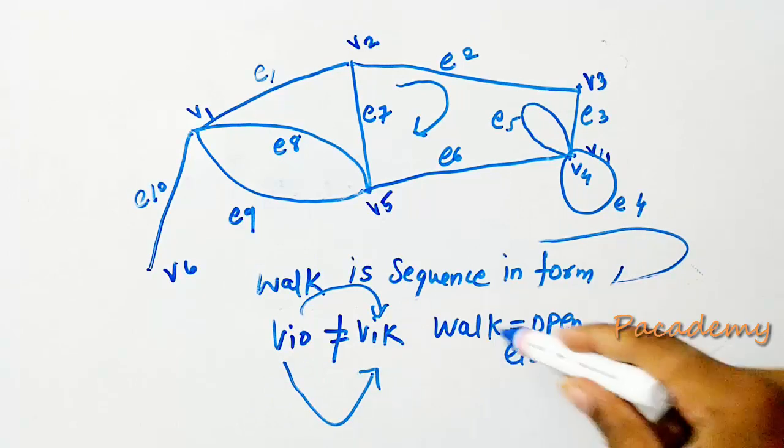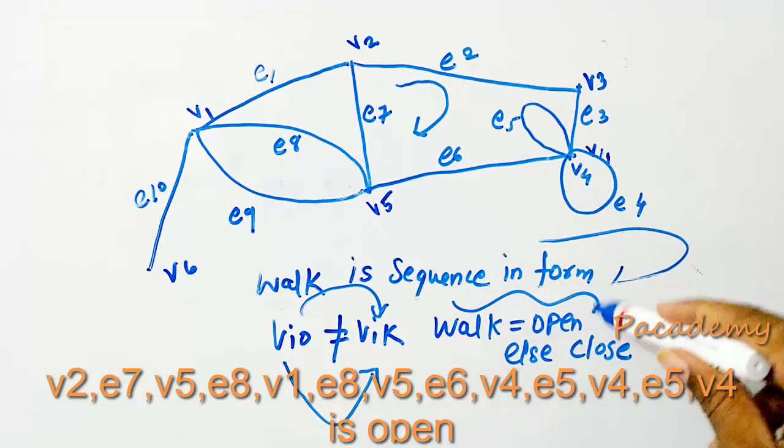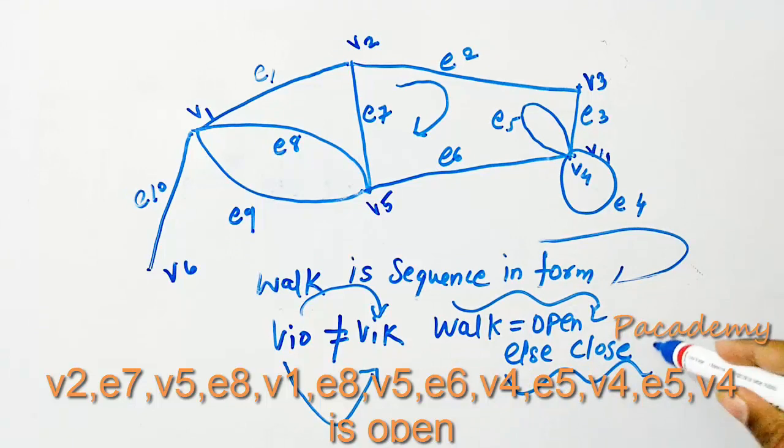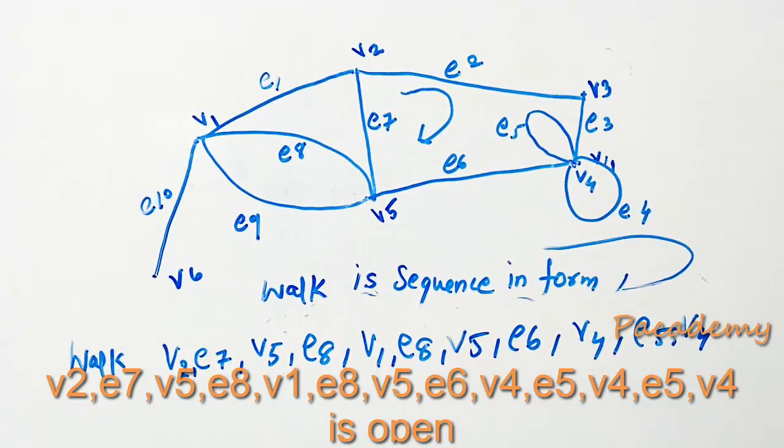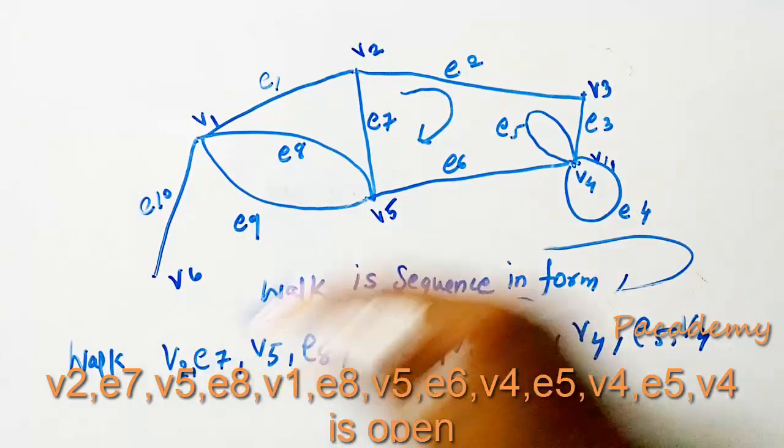If the starting vertex and the end vertex of the walk sequence are not the same, then the walk is an open walk. If they are the same, it's a closed walk.